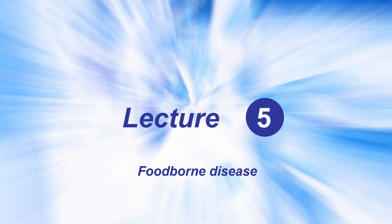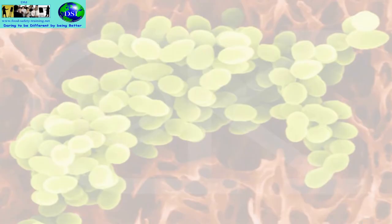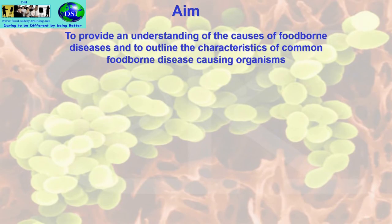Lecture 5 is all about foodborne disease, slightly different from food poisoning. The aim of this unit is to provide an understanding of the causes of foodborne diseases and to outline the characteristics of common foodborne disease-causing organisms.